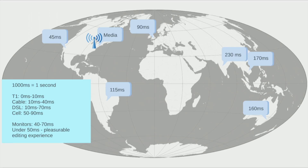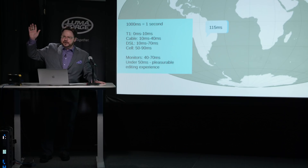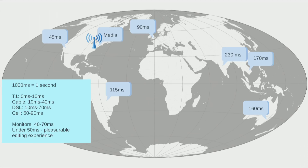Looking at the latency metrics at the bottom of the chart: monitors usually add about 47 milliseconds of latency, especially old plasmas. Under 50 milliseconds equals what I call a pleasurable editing experience — when you hit JKL, there's responsiveness. With bad latency, you hit J, you wait, and then it plays. Nobody wants that. As for outsourcing concerns, look at the latency to the east: 230 milliseconds. That's publicly available information — Verizon keeps an updated quarterly list of connection speeds between continents. I'll get into why this can be remedied in the future.